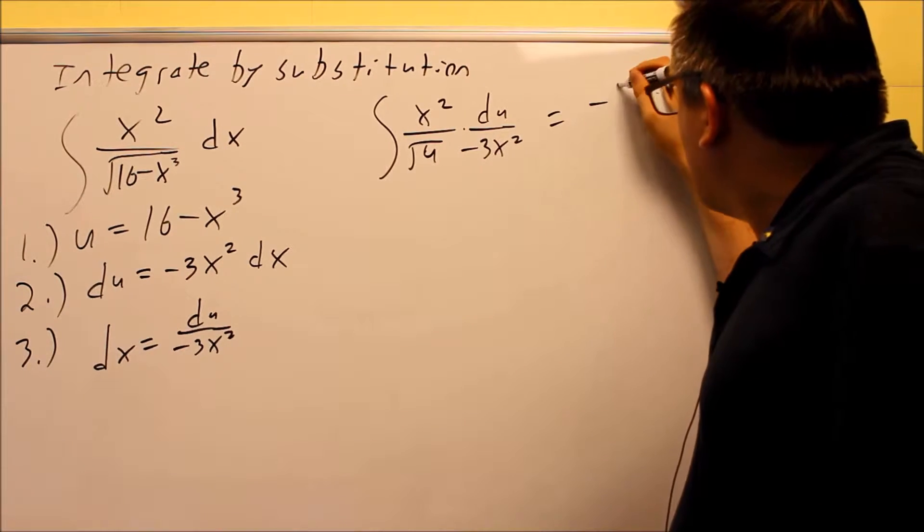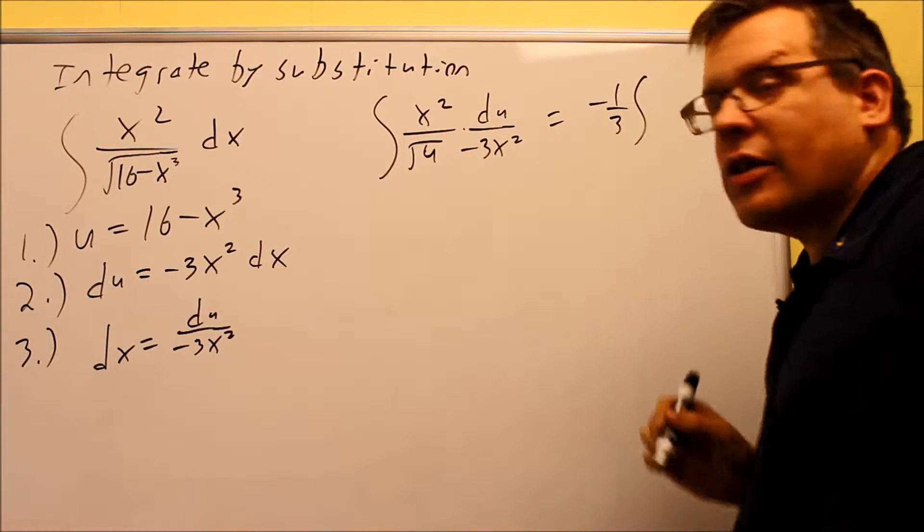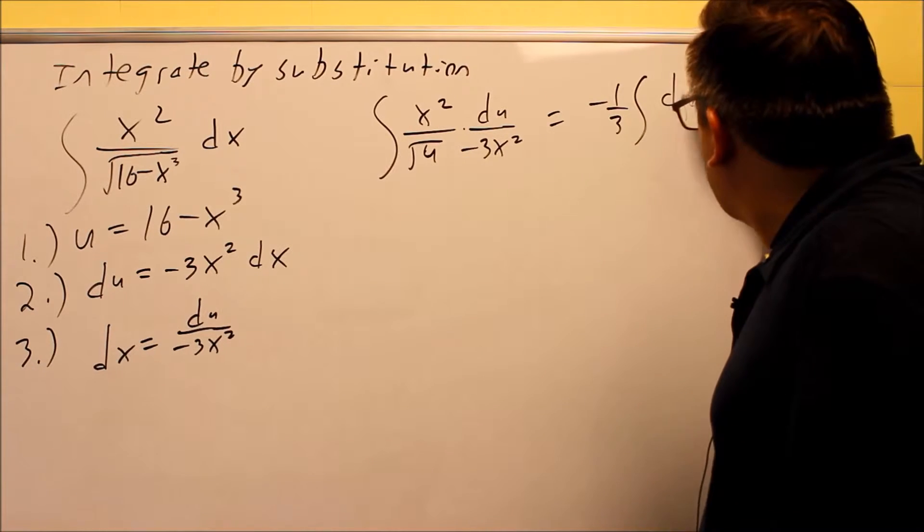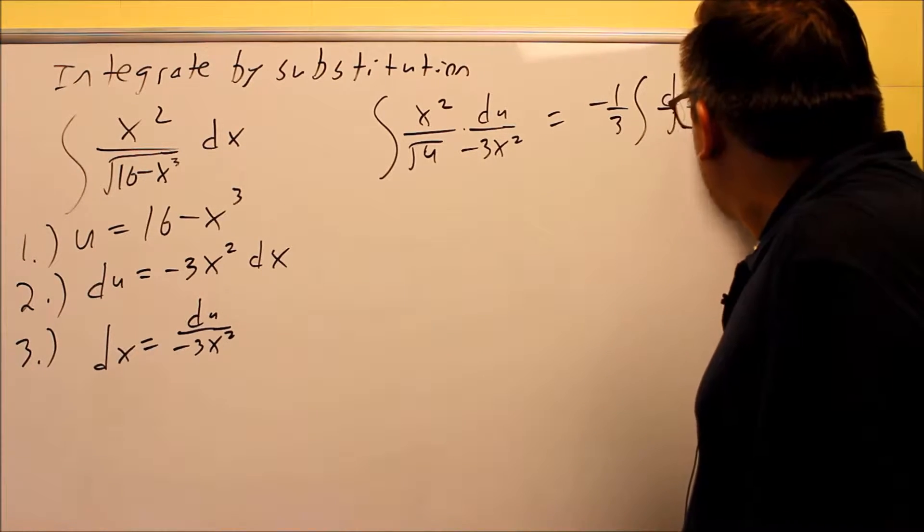We have a three down here, what will happen is that's a negative one-third, I can put that on the outside of the integral. The x squared is going to cancel, and I get du over the square root of u.